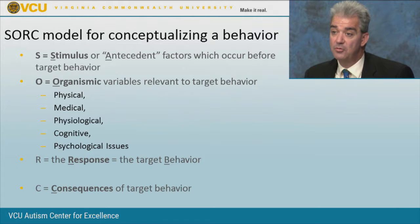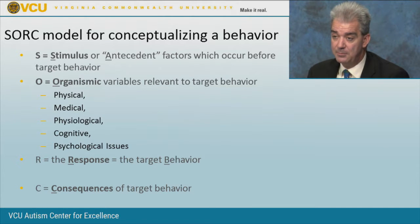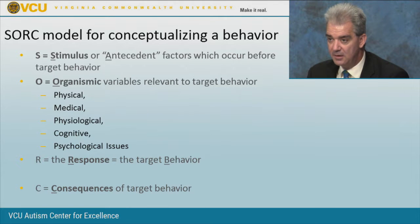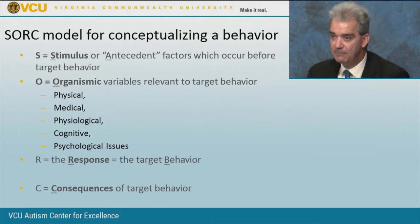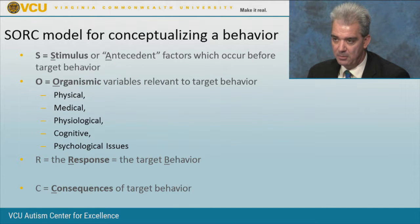Under the SORC model, the S (stimulus) is basically the same as the antecedent — they're synonymous. The R is the response, which is the target behavior. Consequences are exactly the same as in ABC. The only thing different in this equation is the O — organismic variables: things that happen within the skin of the child that we may or may not be aware of or can quantify.